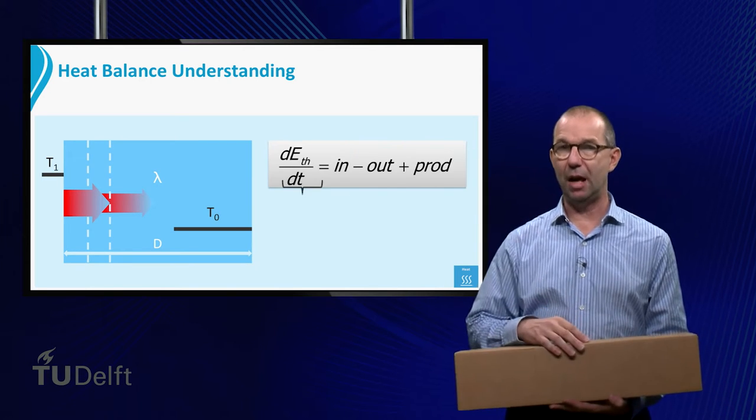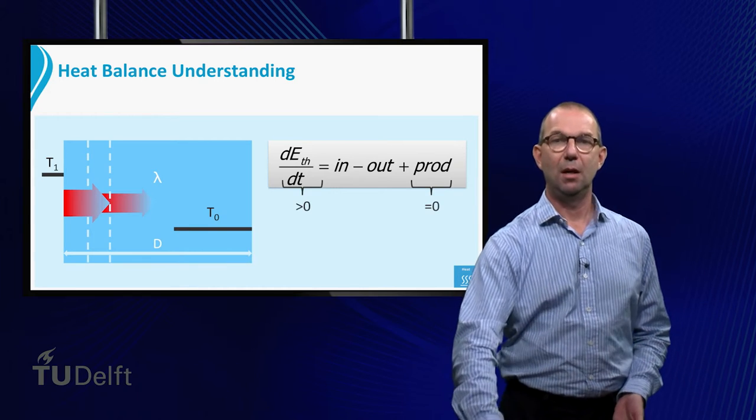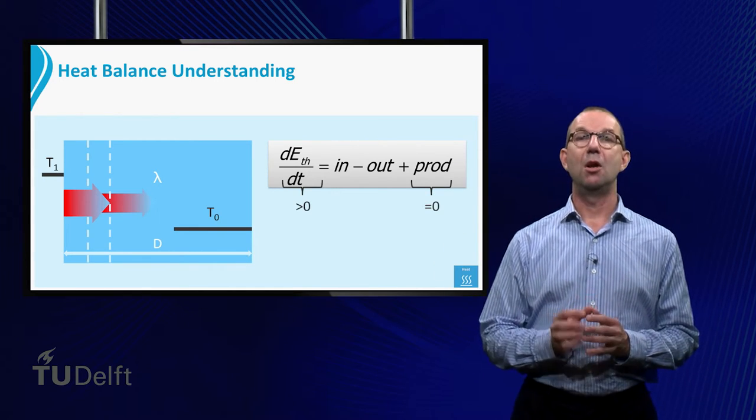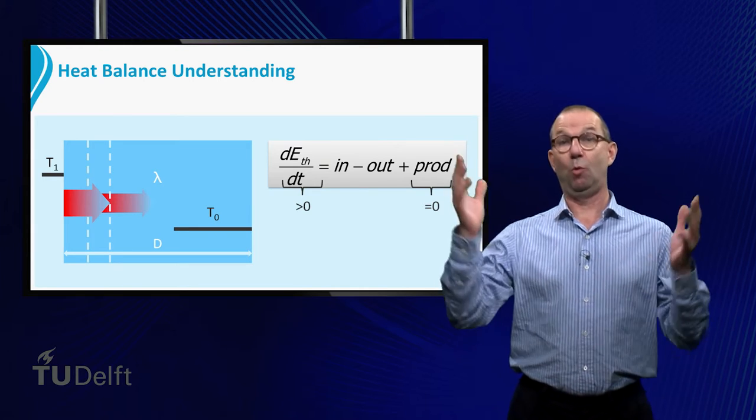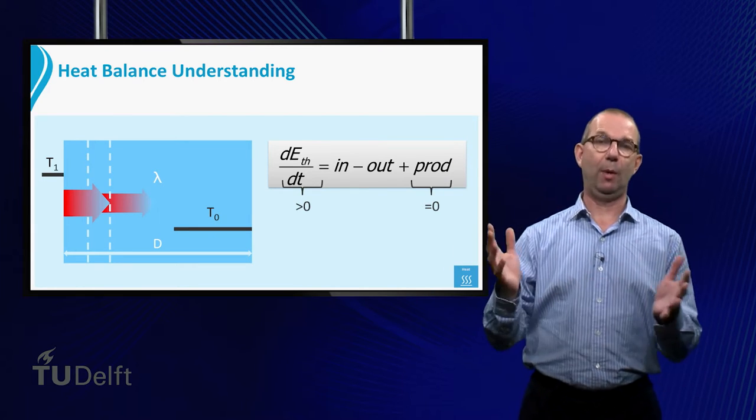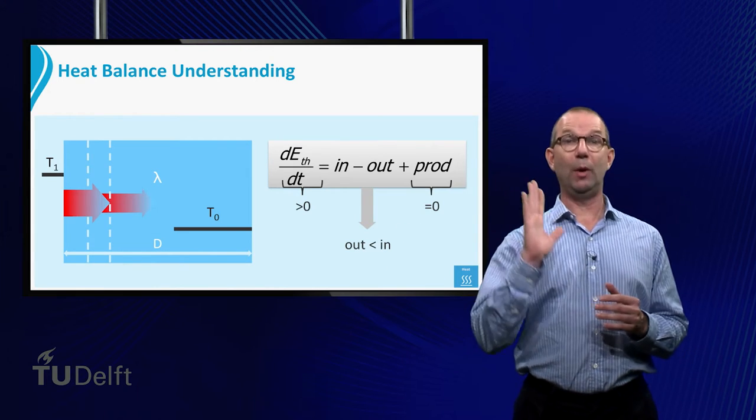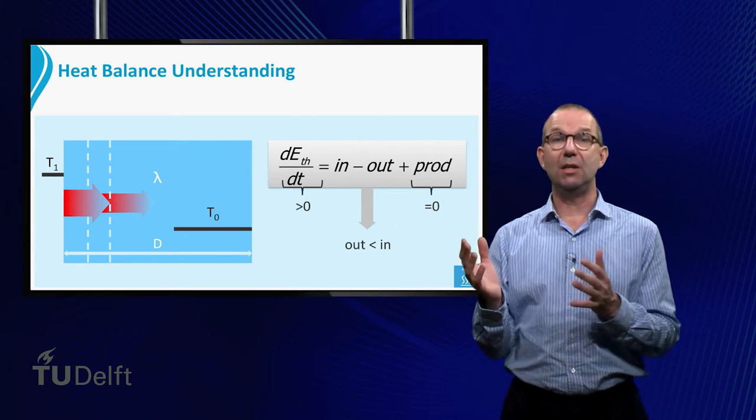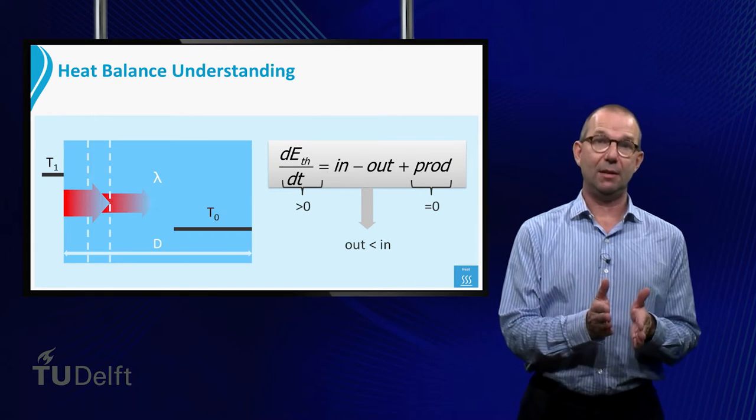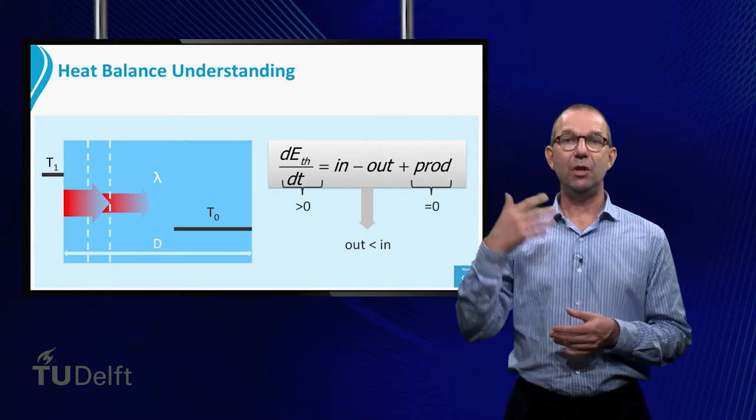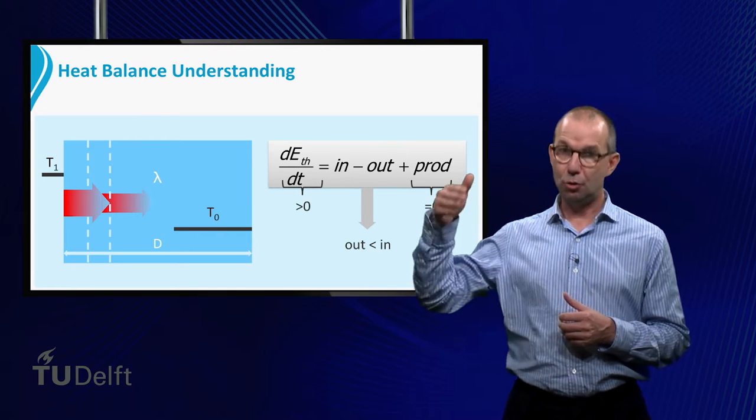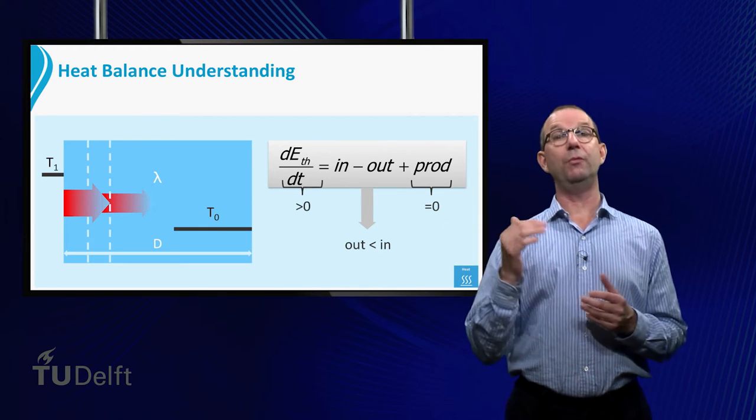This is clearly an unsteady situation, with the dT/dt of thermal larger than zero, the strip is warming up. Consequently, the heat flowing out is smaller than the heat flowing in. This also means that the further we go into the plate, the less heat is available for heating up. This causes the temperature profile to be curved as we saw in the previous sheet.